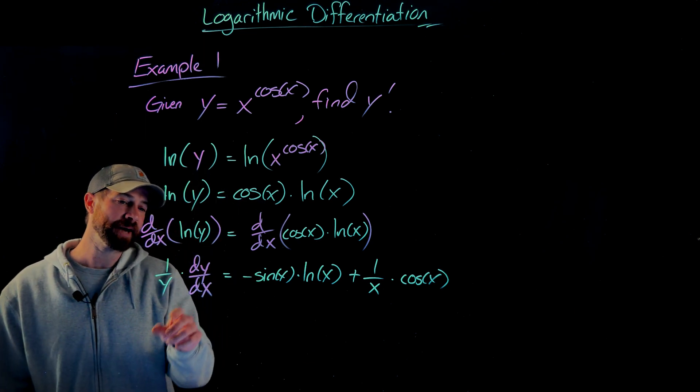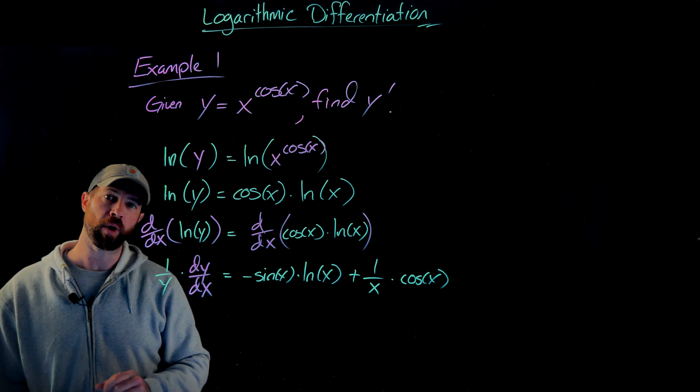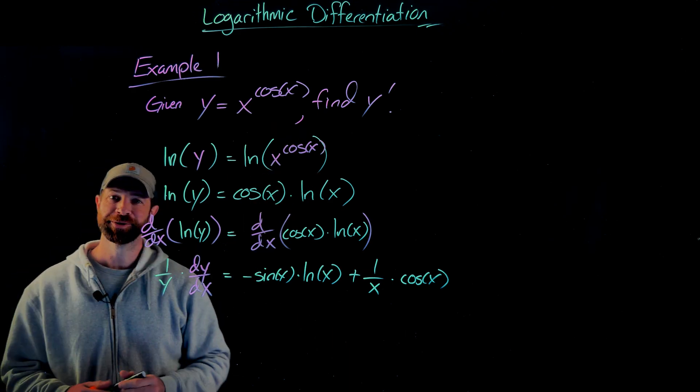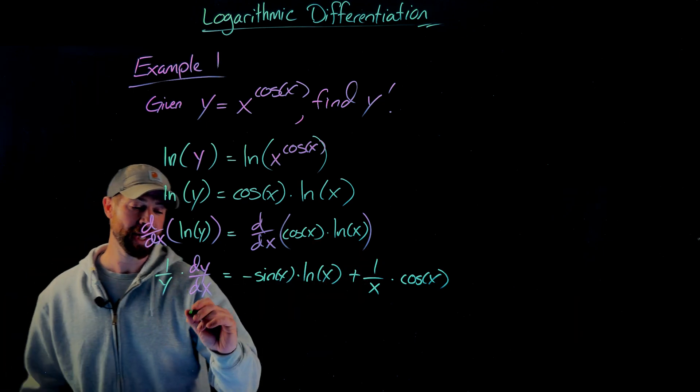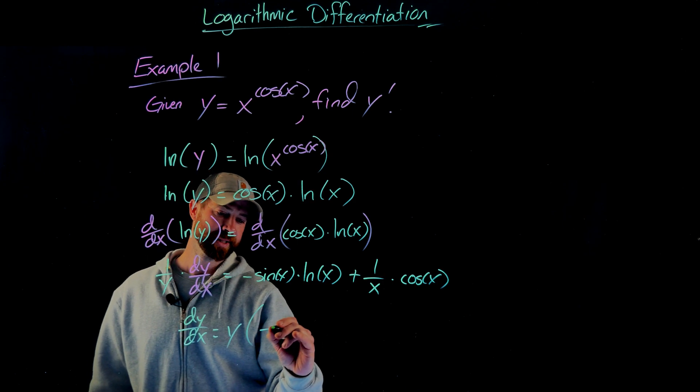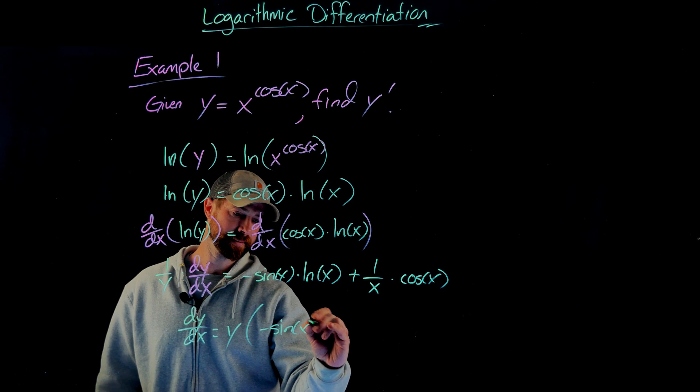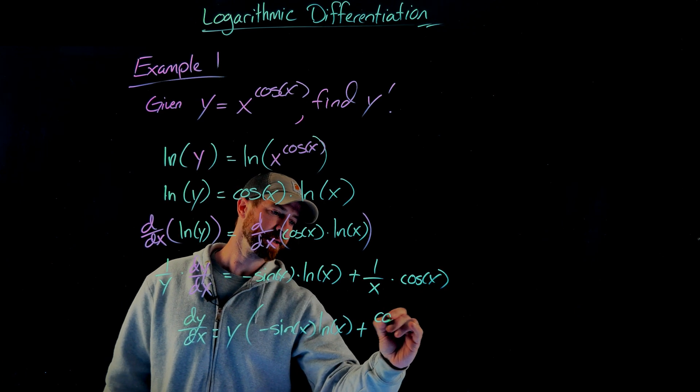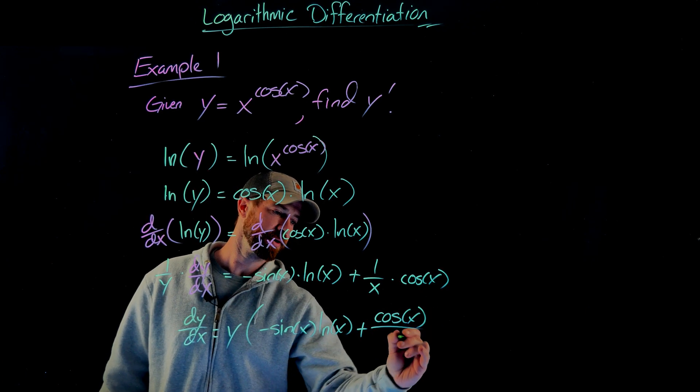At this point, I'm almost there. All I have to do is multiply both sides by y now to get dy dx by itself, or y prime. So when I multiply both sides by y, I get dy dx equals y times negative sine of x, natural log of x, plus let's write this as the cosine of x over x.